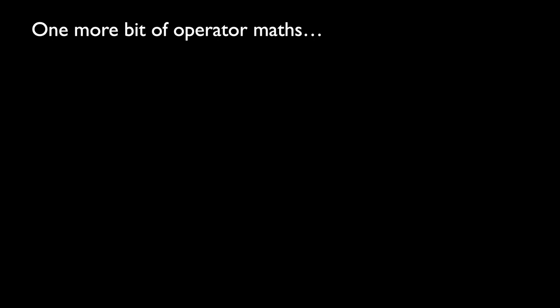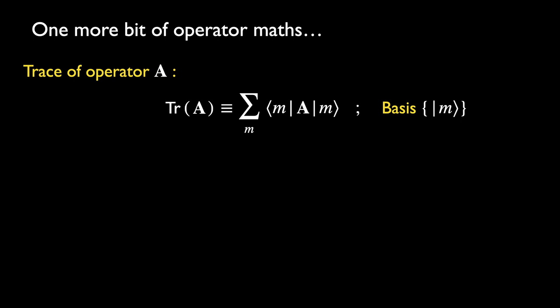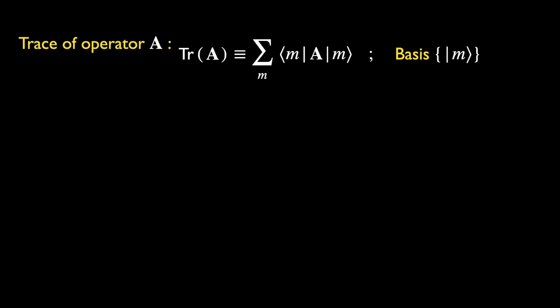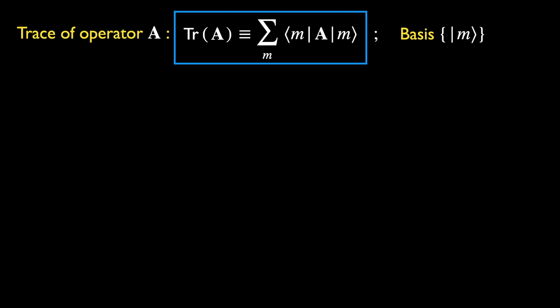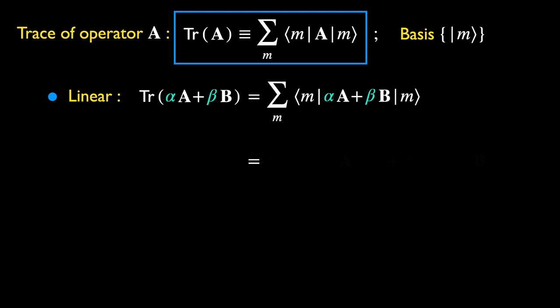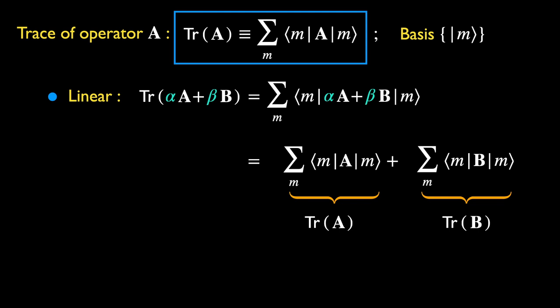Let's introduce one more bit of operator mathematics. This is an operation that acts on an operator and turns it into a number. The trace of an operator A is defined as the sum of diagonal elements of the matrix representation of A given in an arbitrary basis. The fact that the basis can be arbitrary but yet gives the same value for the trace will be proven shortly. The most obvious feature of the trace is that it is linear in its action on operators, where alpha and beta are complex numbers.